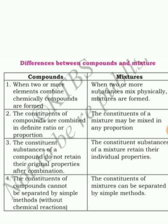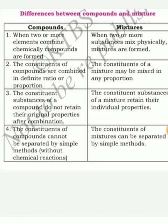Differences between compounds and mixtures. First point — in compounds, two or more elements are combined chemically. In mixture, two or more substances are mixed physically. Second point — the constituents of compounds are combined in a definite ratio or proportion. But the constituents of a mixture may be mixed in any proportion — no limit. In compounds, we have a particular or definite ratio.